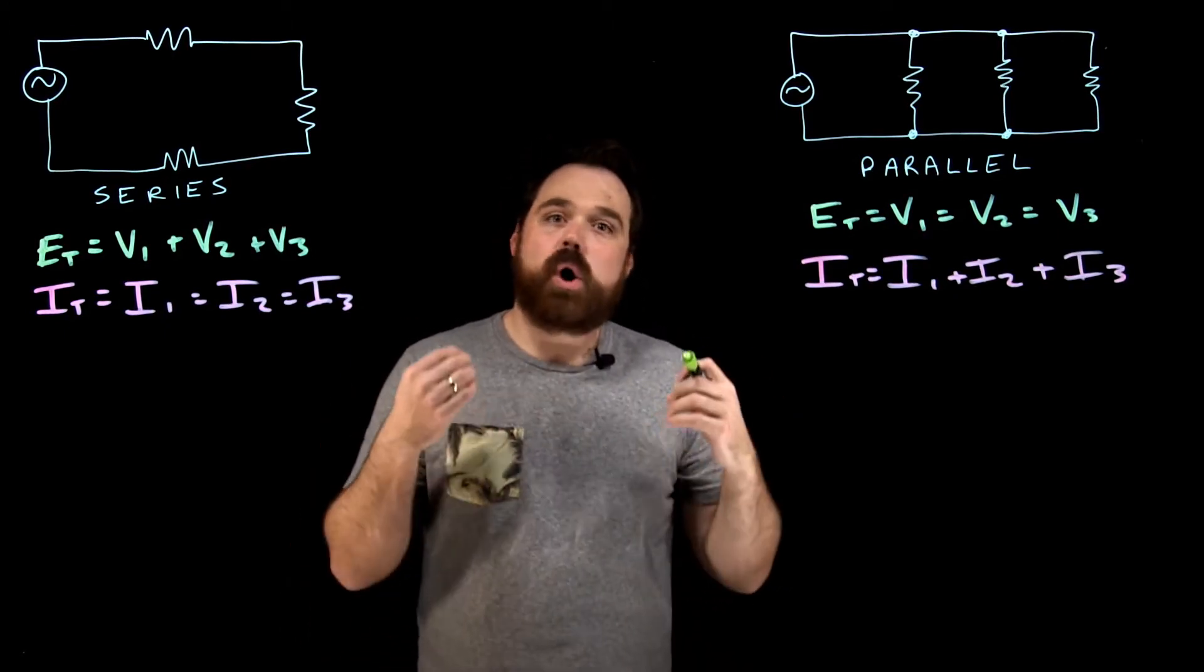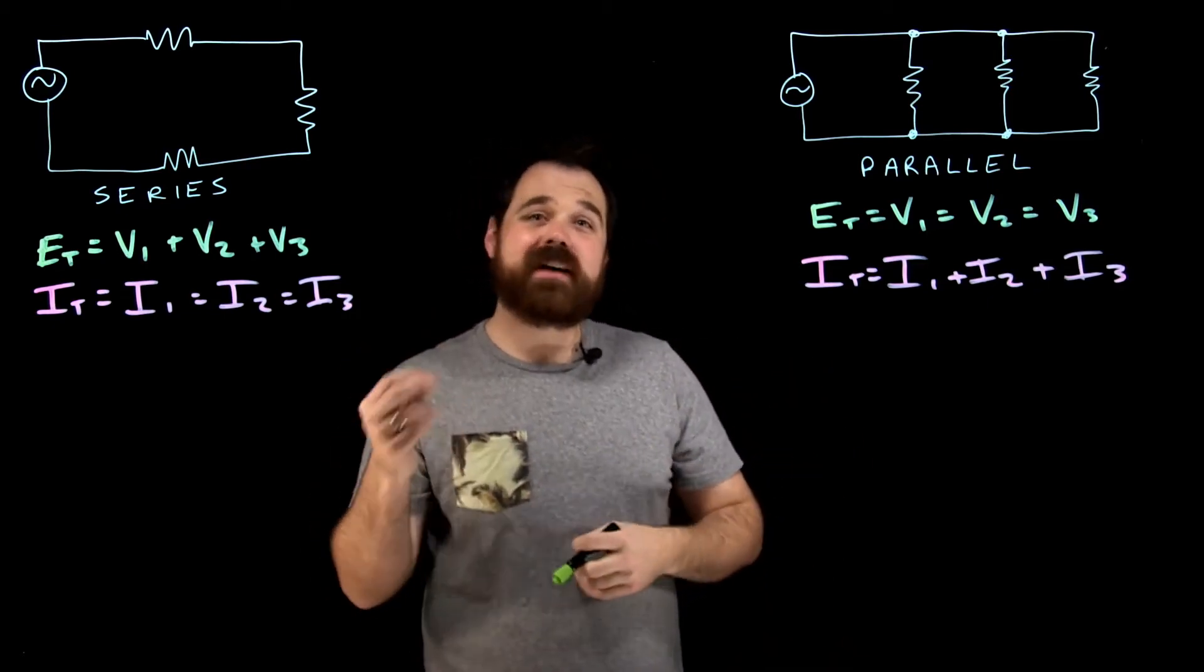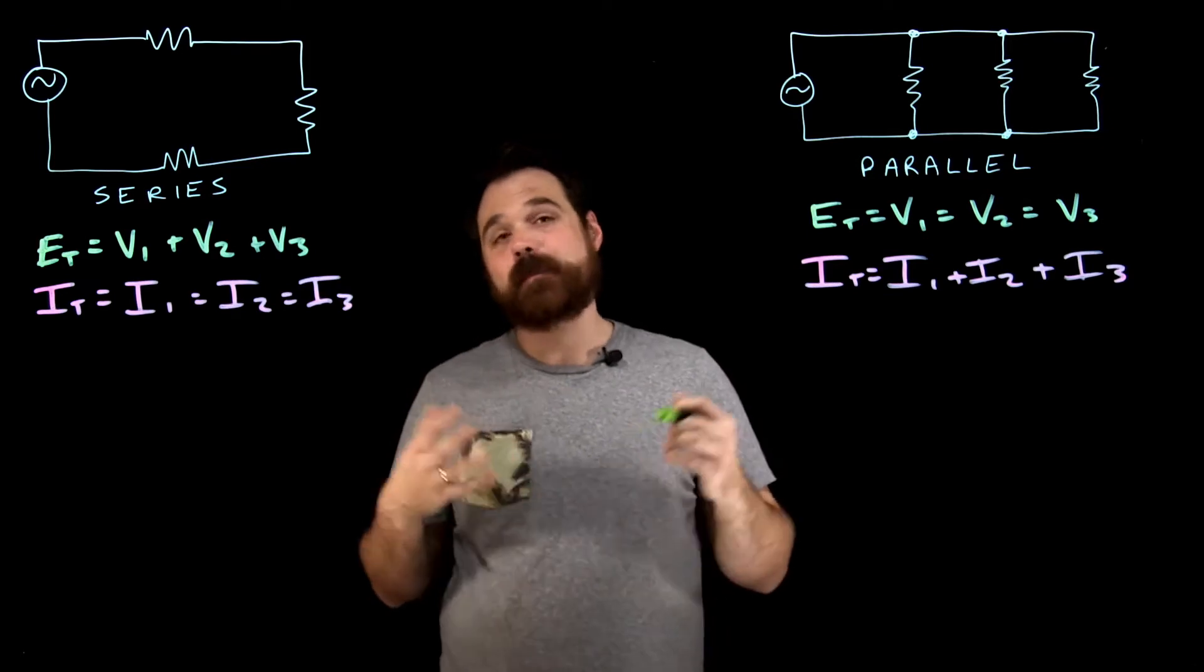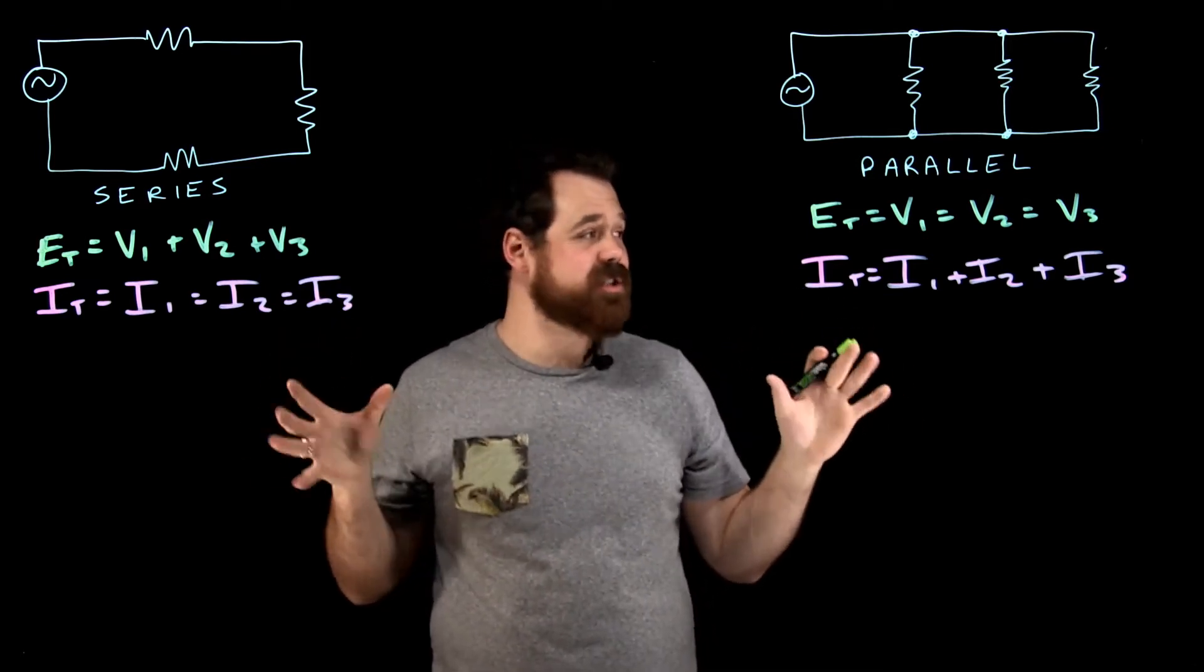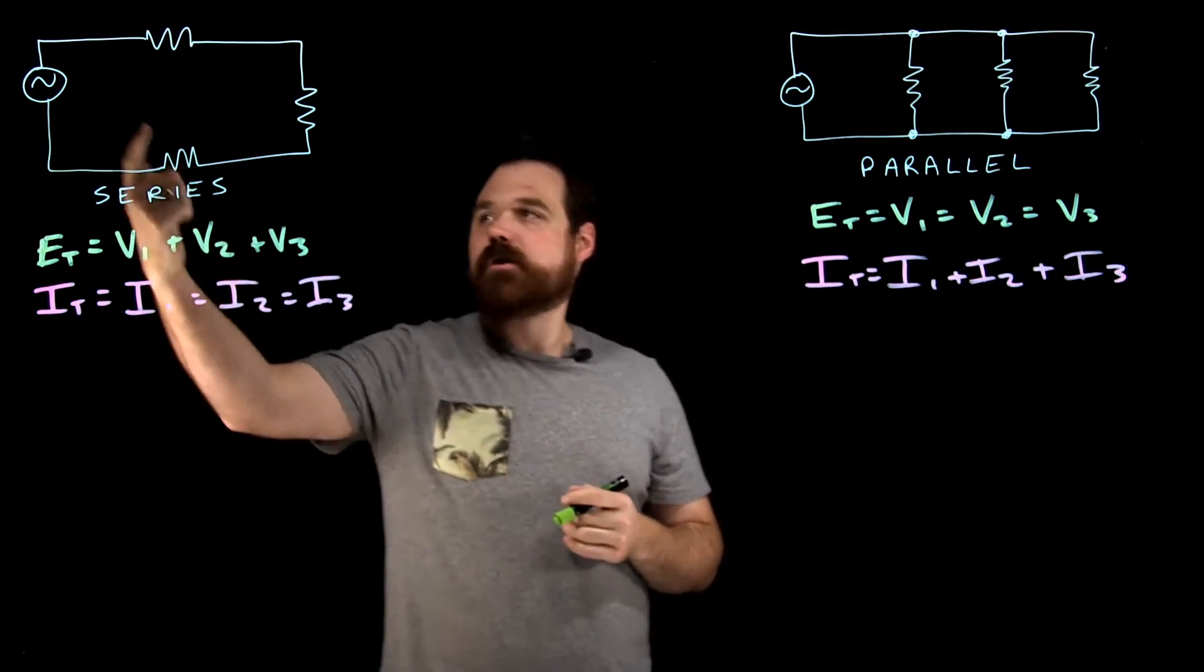Next, I want to talk about ohms, or opposition to current flow. Our ohmic value is our opposition to current flow. In this case, it's just resistance. Let's think about current flowing through this circuit.